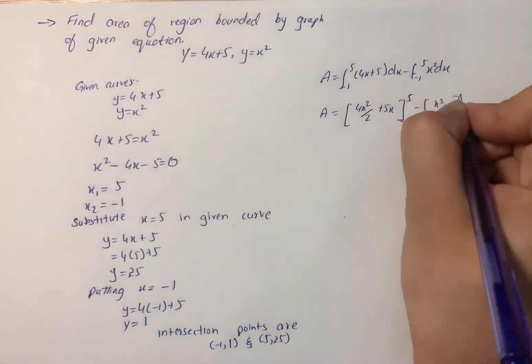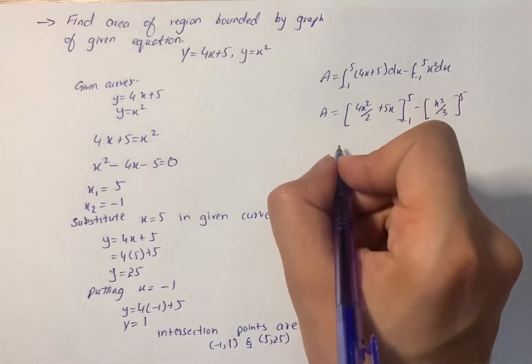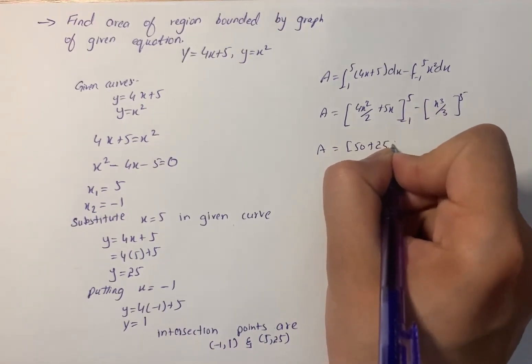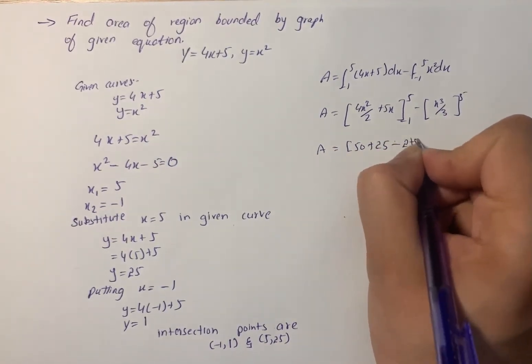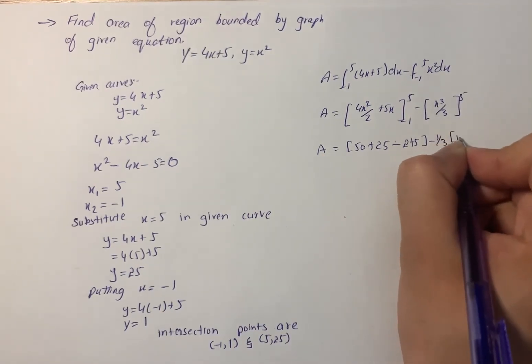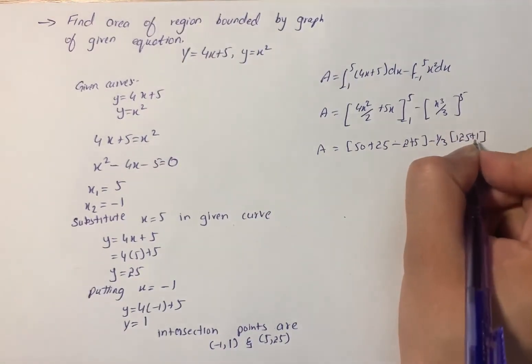On simplification, we have A equals 50 plus 25 minus 2 plus 5 minus 1/3 times 125 plus 1. Now A becomes 78 minus 42.